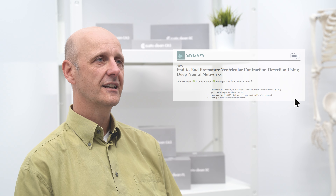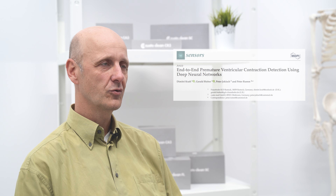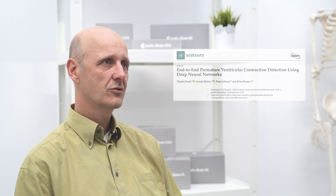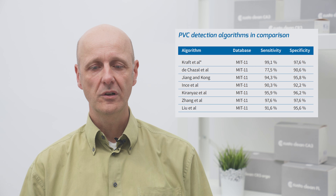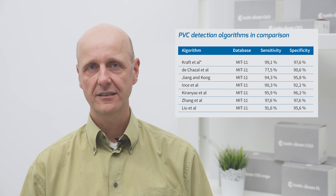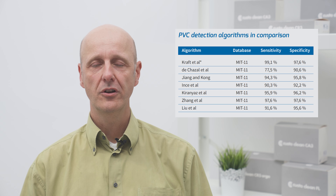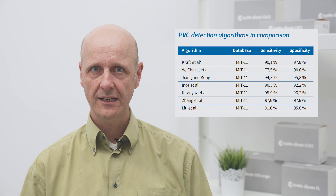We also carried out a validation study for this neural network, and in this validation study we were able to show that we can identify the normal beats with a sensitivity of 99.9% and a specificity of 99.7%. For premature ventricular contractions we have achieved a sensitivity of 99.1% and a specificity